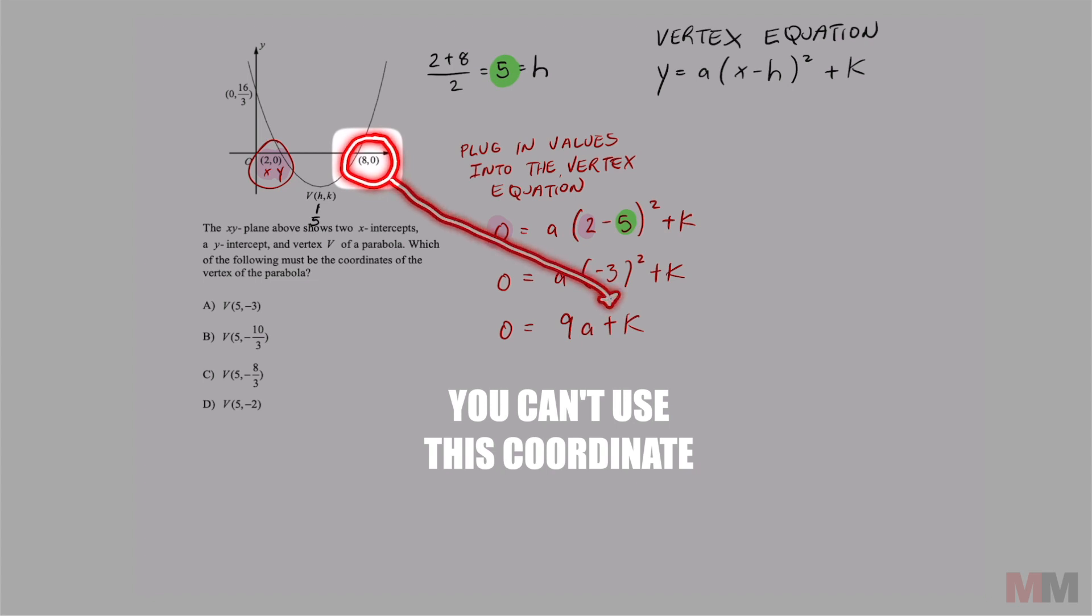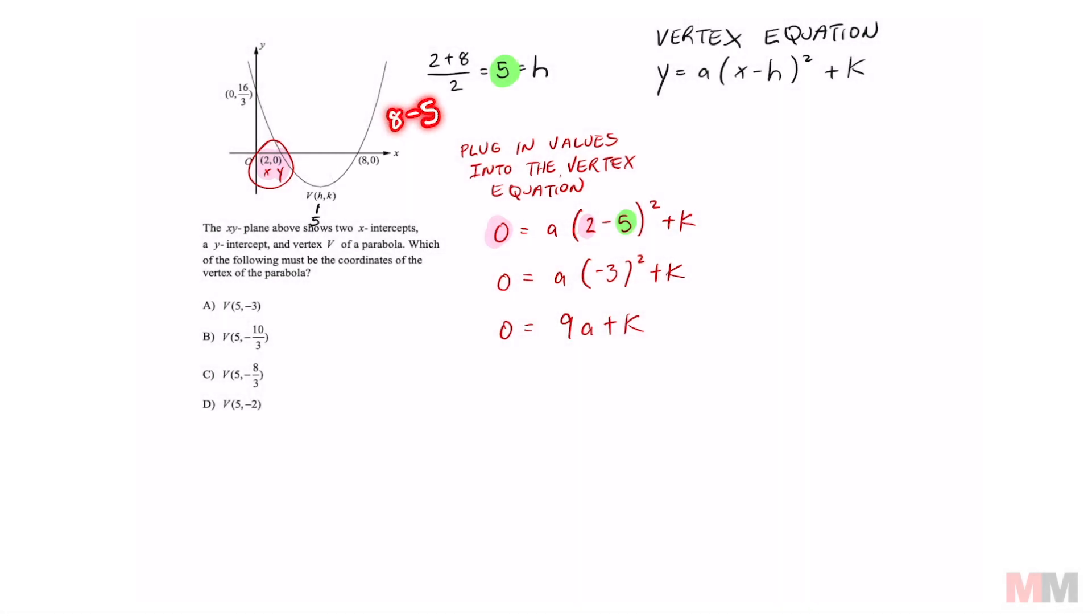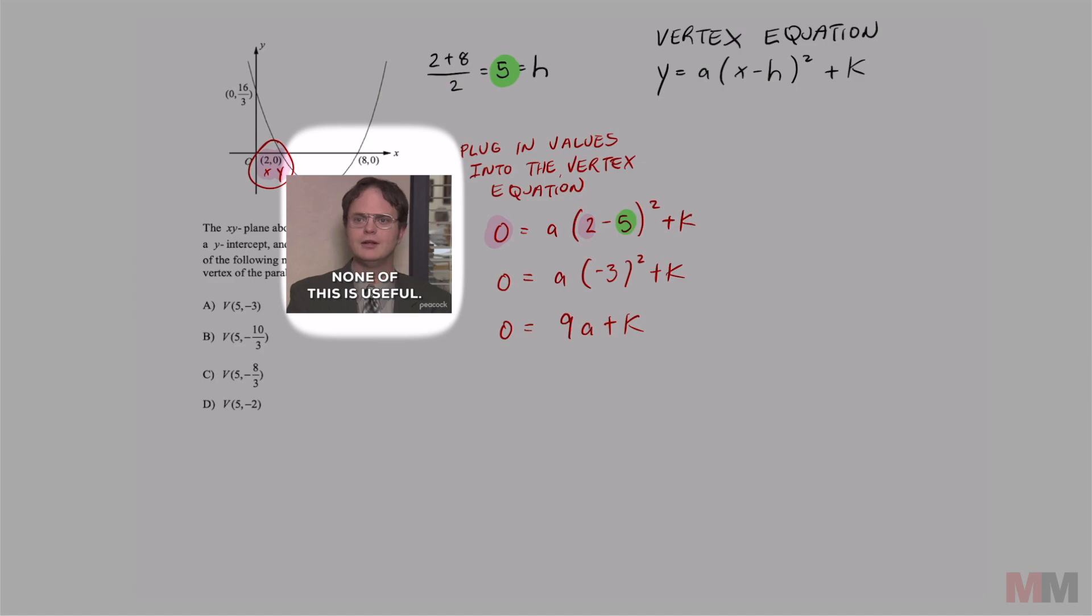And the part that kind of stinks is that we cannot use 8 and 0 because you're going to end up getting the same thing as 9a plus k. I'll tell you why really quick: because if you do 8 minus 5 squared into this part of the vertex form you're going to end up getting 9a, so that's going to be useless. We got to do the fraction one.